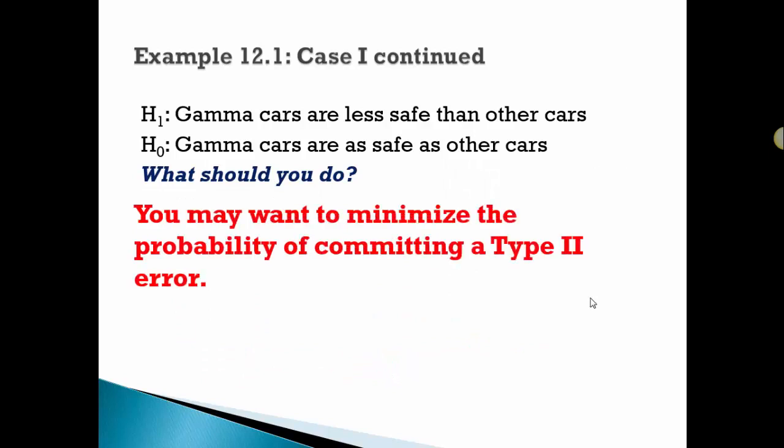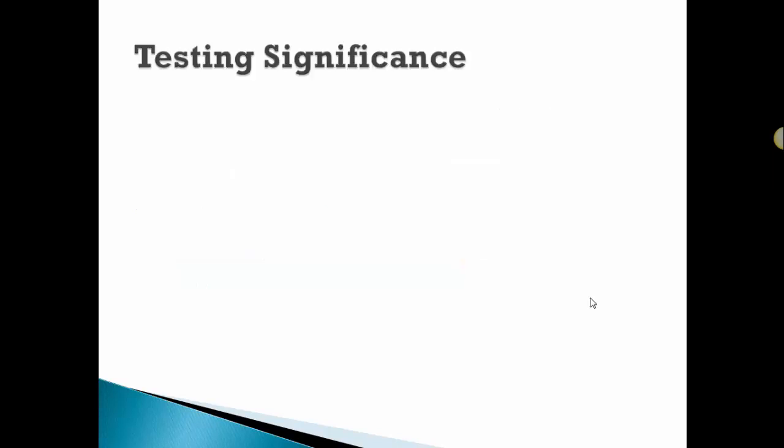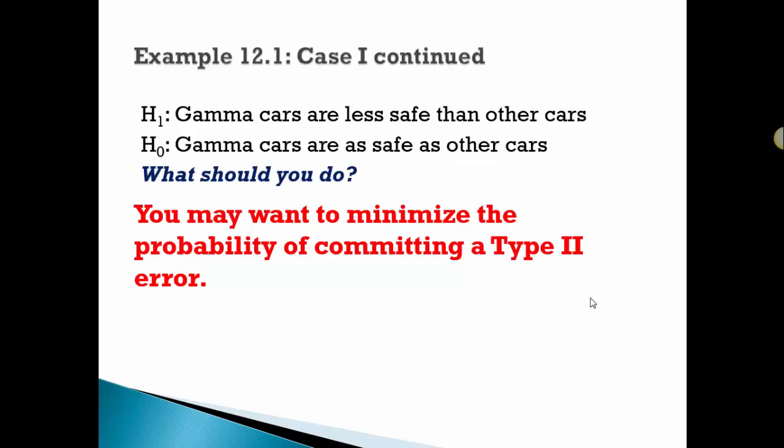So what do you do? Generally, in this case, you probably would want to minimize the probability of committing the Type II error because the safety of the car is probably more important than getting a good bargain on the car.